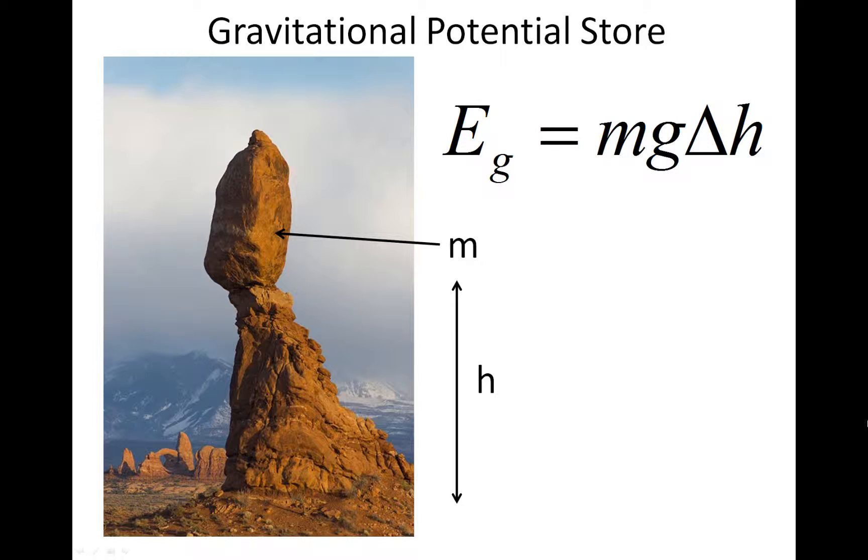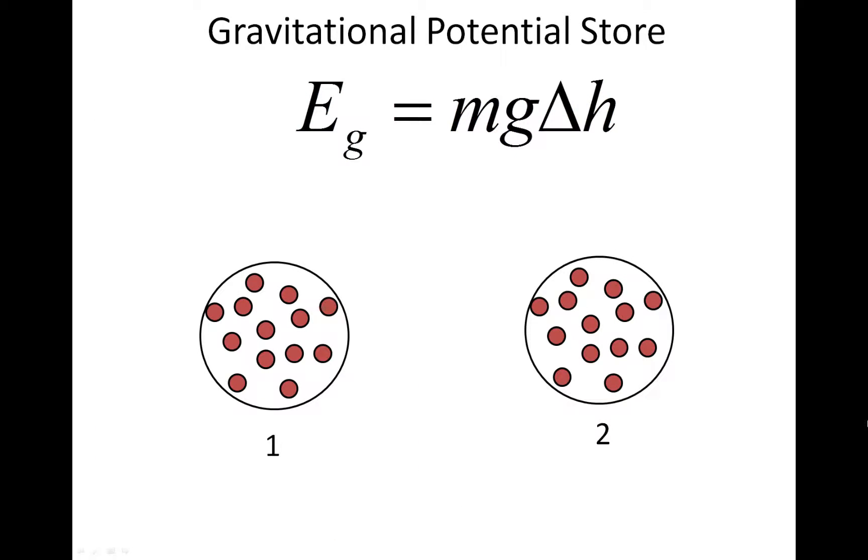So let's look at how the energy depends on each of these quantities. First, the mass. If we have one object that's more massive than another, then it can have more energy in its gravitational potential store. So if mass 1 is smaller than mass 2, then the energy in the gravitational potential store of mass 1 is less than that of mass 2.